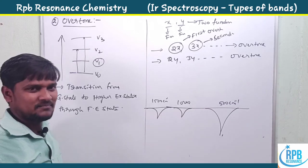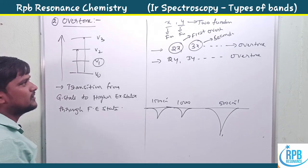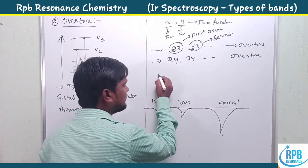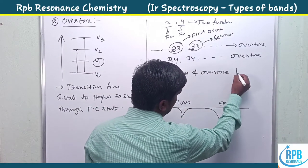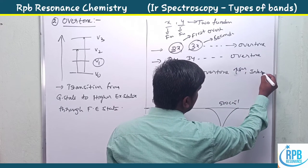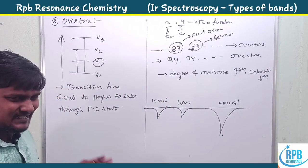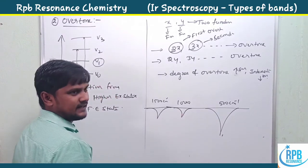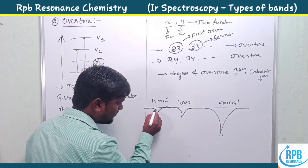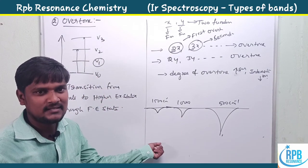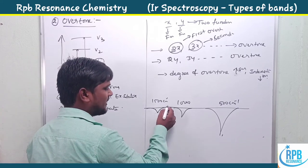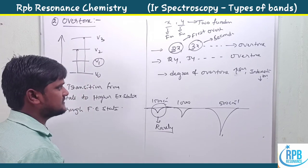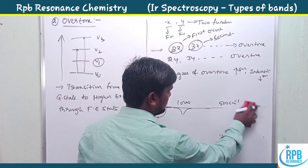Generally, overtone bands are less intense compared to fundamental vibrations. As the degree of overtone increases, intensity decreases. Second and higher overtones are rarely observed — very rare cases. Overtone bands are less intense bands overall when compared to fundamental vibrations. These kinds of transitions are called overtone vibrations.